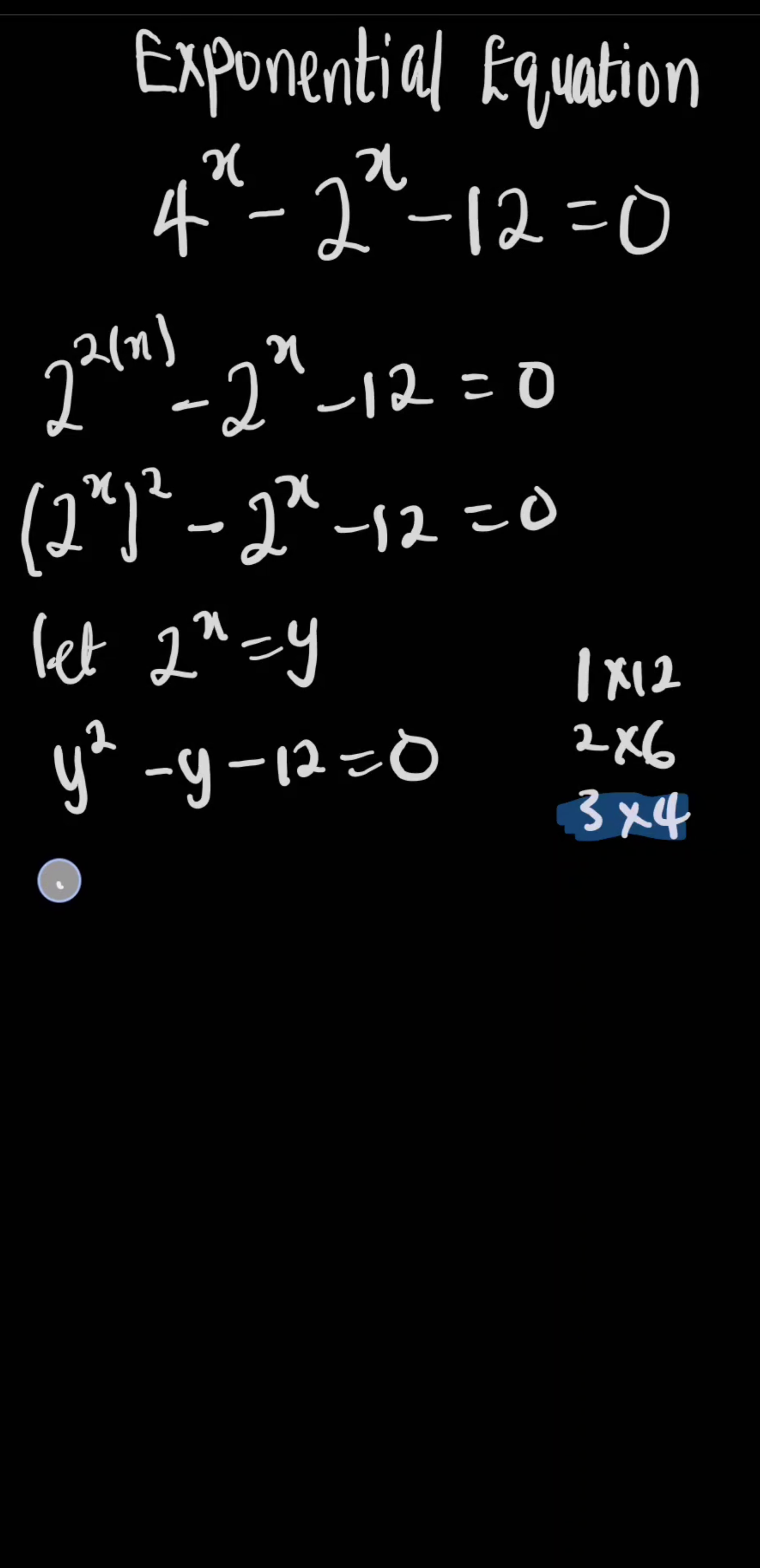I'm going to have y squared, and we need negative 4y. So this is going to be negative 4y plus 3y minus 12 equals 0. Now factor out: we have y times y minus 4 plus 3 times y minus 4 equals 0.